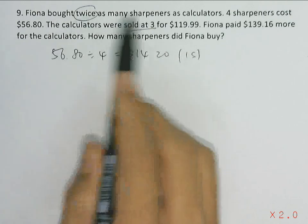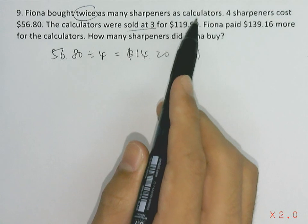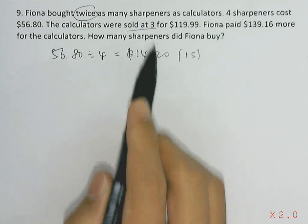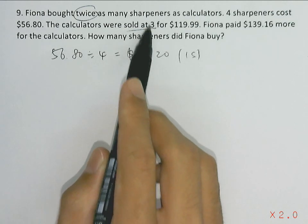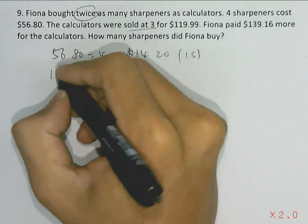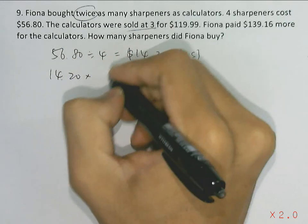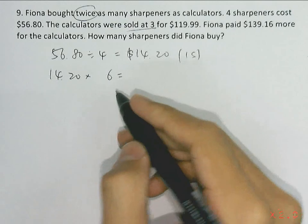If the calculators were sold at three and the sharpeners must be twice the number of calculators, then for every three calculators she must have bought six sharpeners. So we find the cost of six sharpeners: taking $14.20 multiplying by 6, that will give us $85.20.